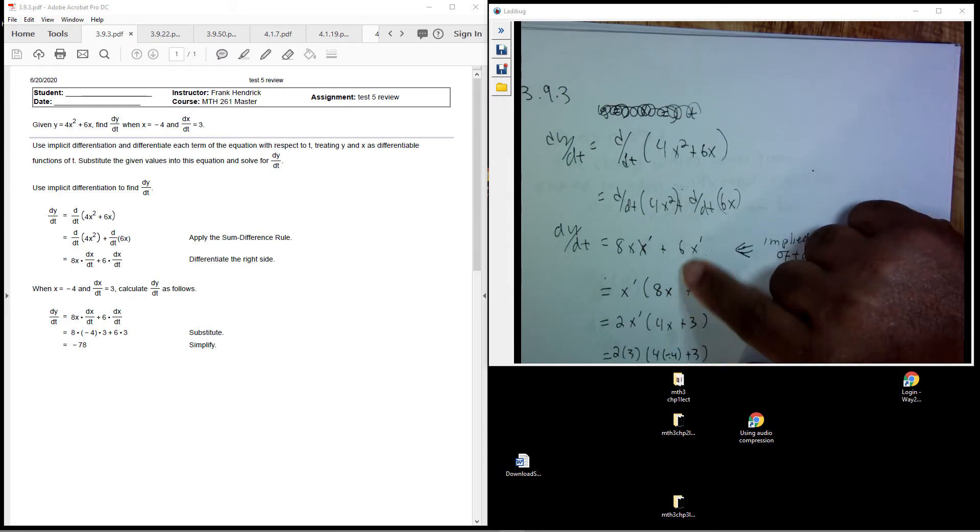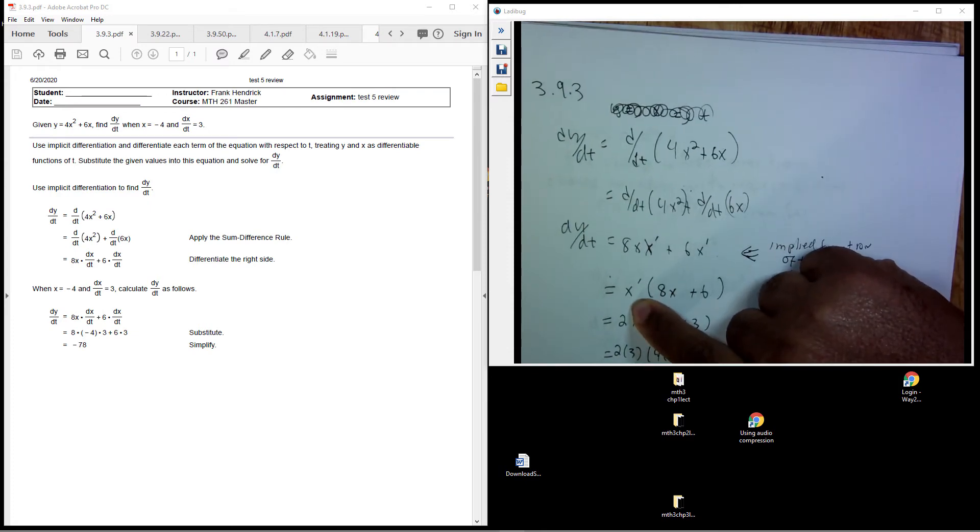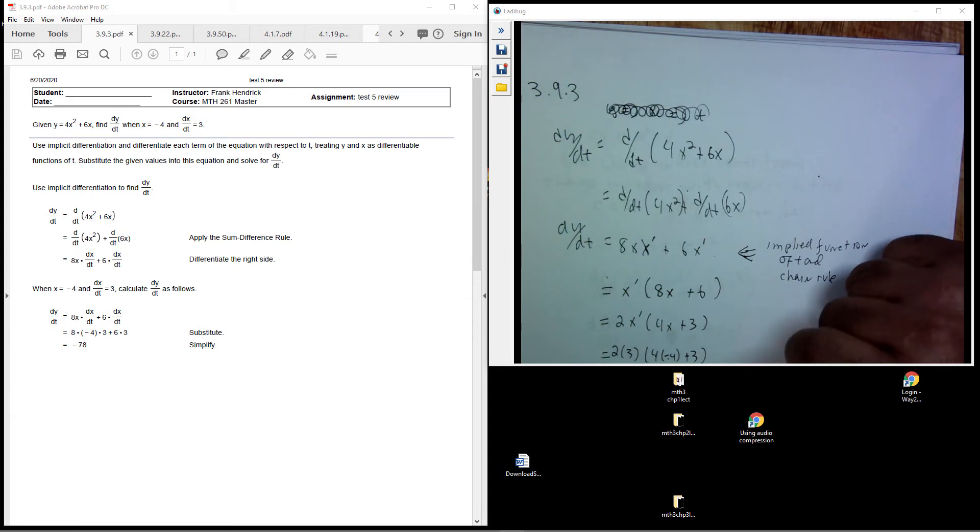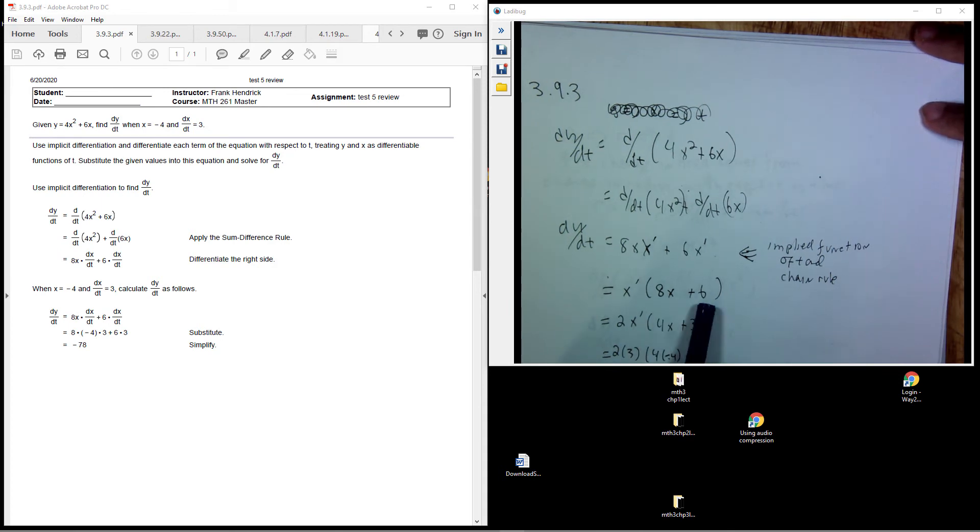So when we get to this point here, after you've taken the derivative, we want to find dy/dt, and we can look at what we're given. In this case, we have a common factor, we can factor out a 2.